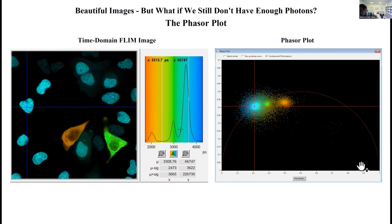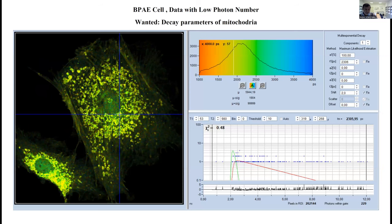What you get then is for every decay function you get a pointer. The pointer has a phase angle and it has a magnitude which is the distance. If you have different objects of different decay signature, then you see that these objects form different clusters in the phasor plot.